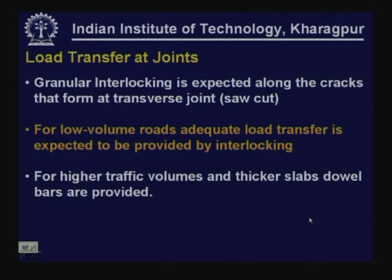The load transfer at joints can be through granular interlocking, expected along the cracks that form at the transfer joint which develop below the socket. For low volume loads, adequate load transfer can be expected to be provided by interlocking — usually we do not provide dowel bars in the case of very low volume loads. We assume that the granular interlocking mechanism is capable of providing sufficient load transfer efficiency to keep stresses within permissible limits. For higher traffic volumes and thick slabs, dowel bars are going to be necessary.